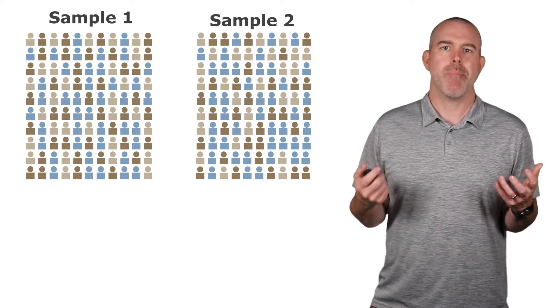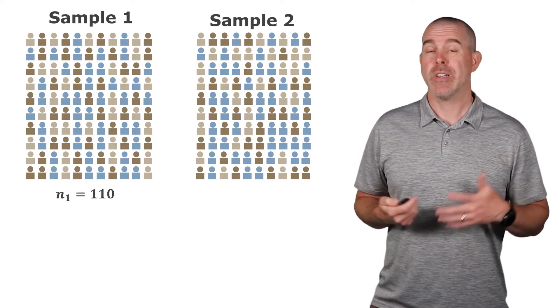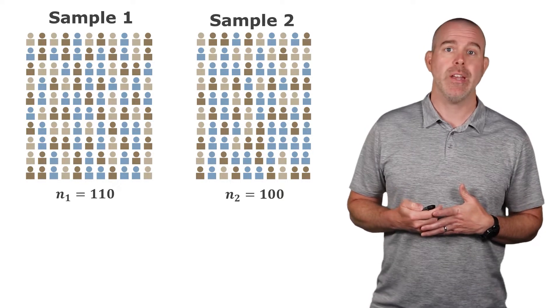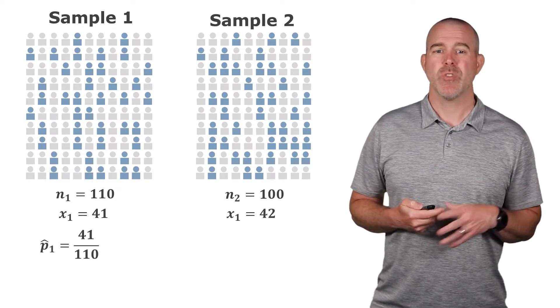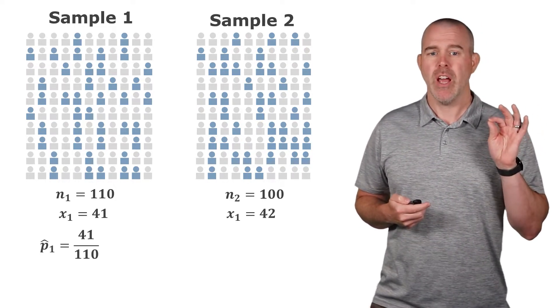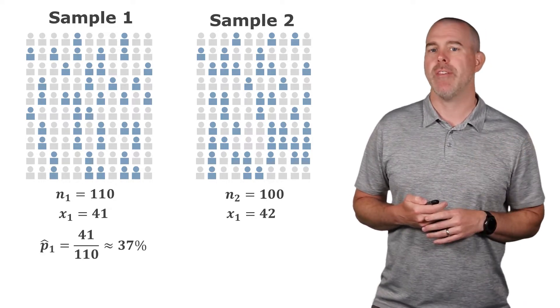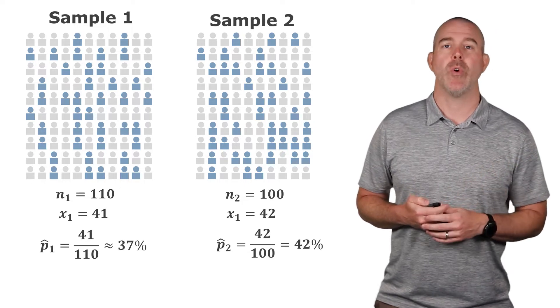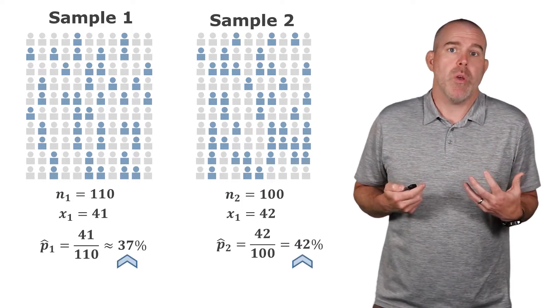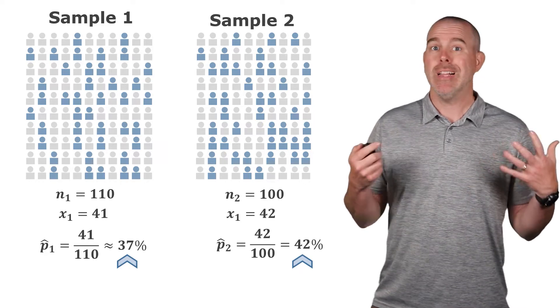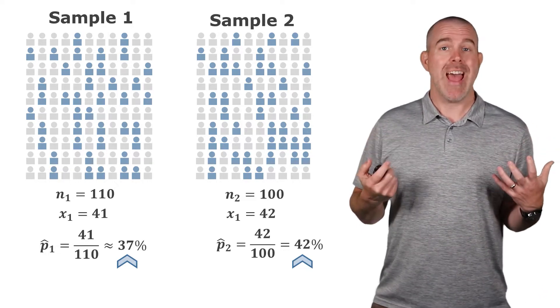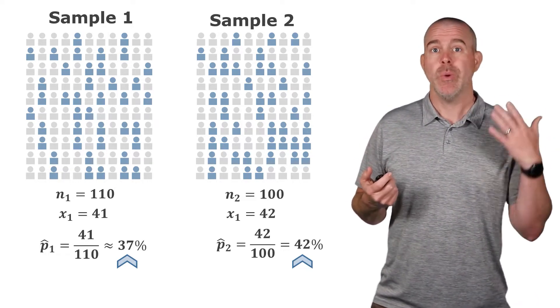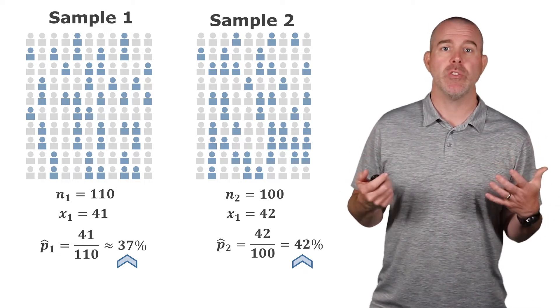Let's say we have a couple of different samples and we want to compare the proportion that are blue. The first sample has 110 individuals, second sample has 100. We have 41 blue in the first sample and then 42 blue in the second. So the first sample proportion that are blue would be 41 out of 110, that's about 37%. Second sample 42 out of 100, that's 42%. So what we want to do is we want to compare these two proportions. Now clearly they're different at the sample level, but the question is, is that difference significant? We need to develop some theory behind the difference between two population proportions.